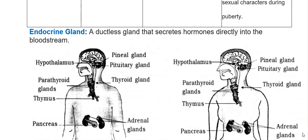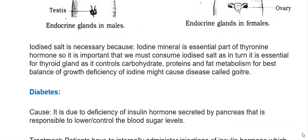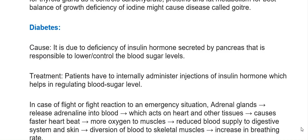An endocrine gland is a ductless gland that secretes hormones directly into the bloodstream. Iodized salt is necessary because iodine is an essential part of the thyroxine hormone; deficiency of iodine may cause a disease called goiter. Diabetes is caused by deficiency of insulin, the hormone secreted by the pancreas that controls blood sugar levels. Treatment requires patients to internally administer insulin injections to help regulate blood sugar levels.